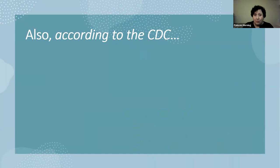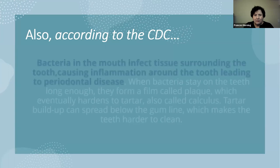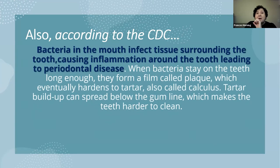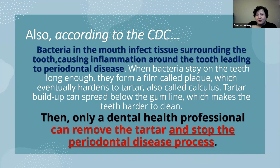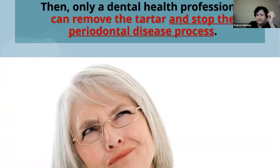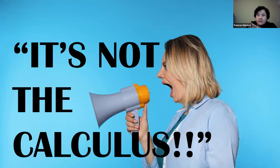The CDC gives statistics that about 50% — I'd say more like 80% — of the population has some level of periodontal disease, and if you're over 65 there's a 70% increase. The CDC says bacteria in the mouth infect tissue surrounding the tooth, causing inflammation, and if you don't remove it, it hardens into tartar — calculus — which can spread below the gum line. But first you're telling me it's bacteria causing periodontal disease, now you're saying it's the tartar we have to remove. Which one is it? It's the biofilm. You have to modulate that biofilm.